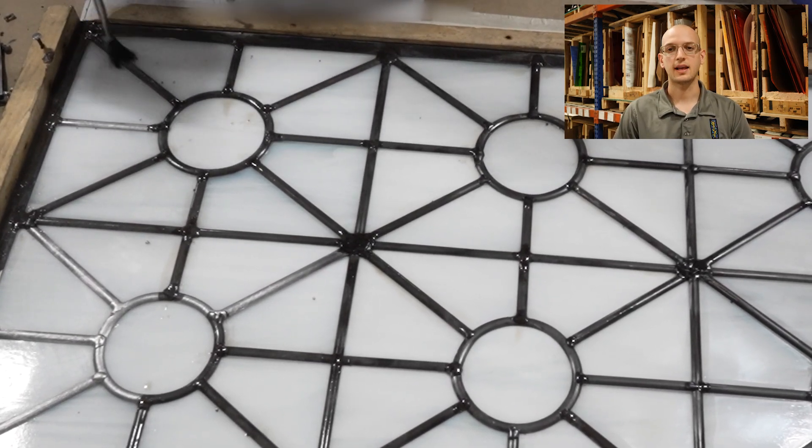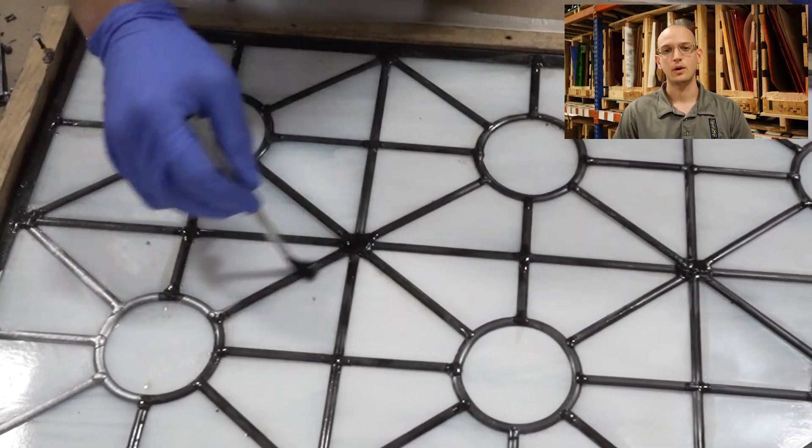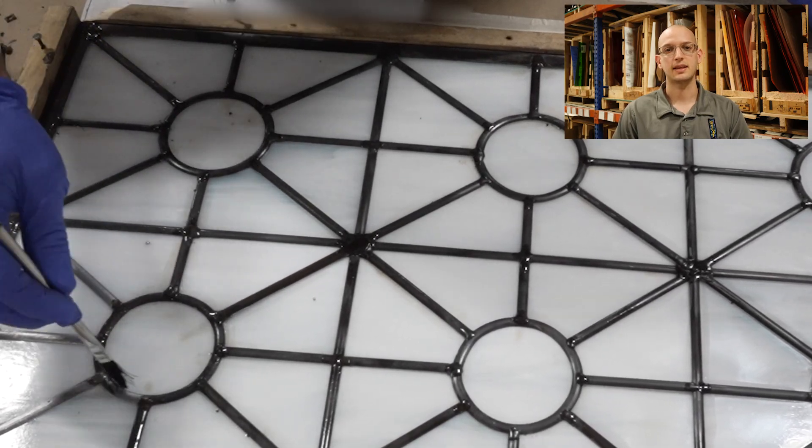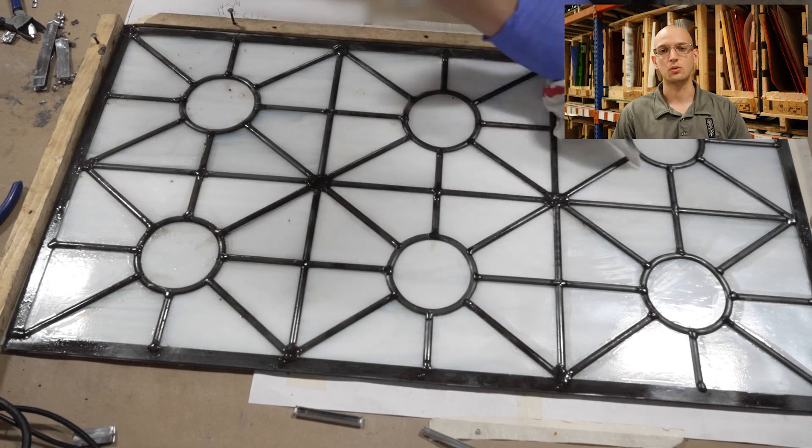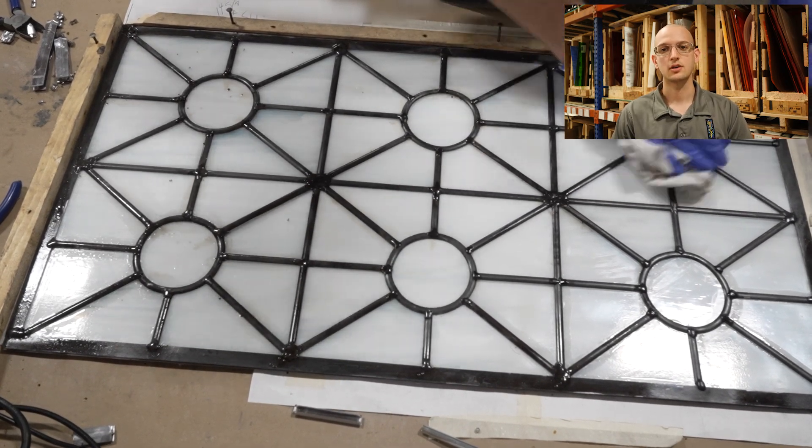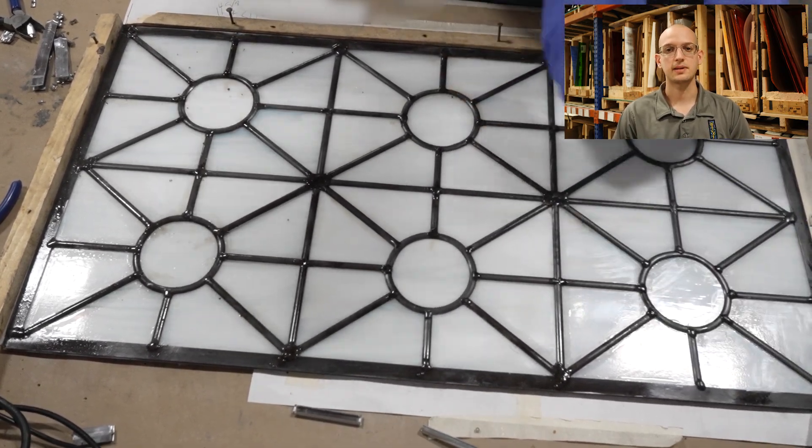So since we are not applying stained glass putty to darken up the lead, we are applying a black patina to the lead to get this nice finished look. It's important to clean up the lead nicely with some steel wool or a wire brush to make sure the lead takes the patina evenly.